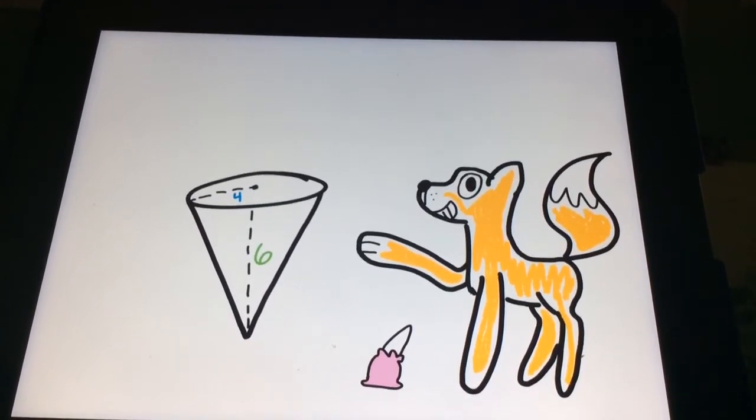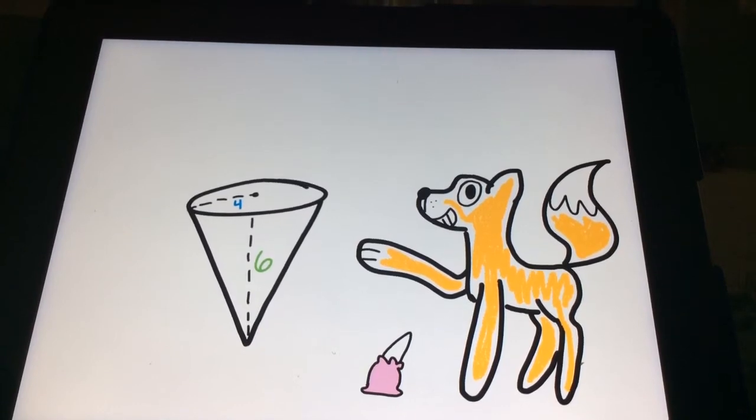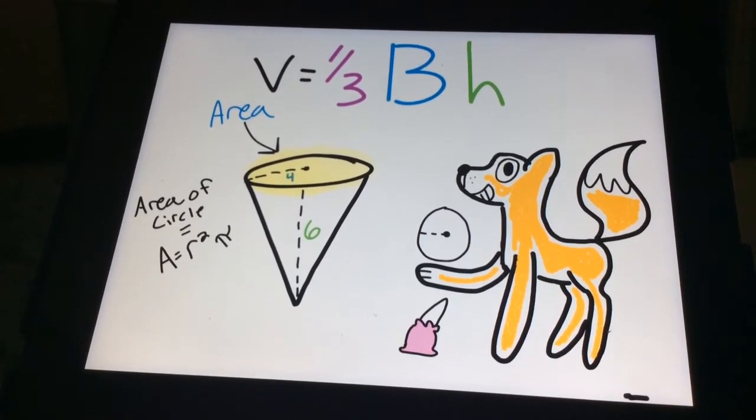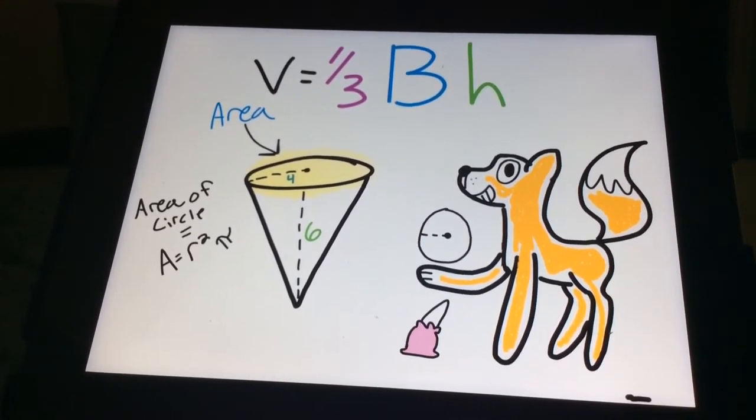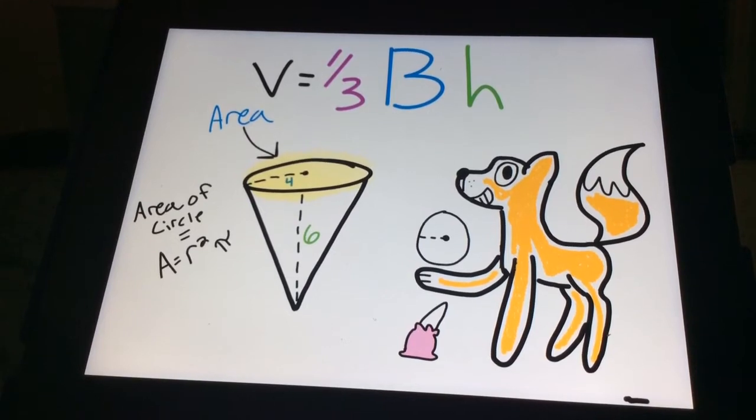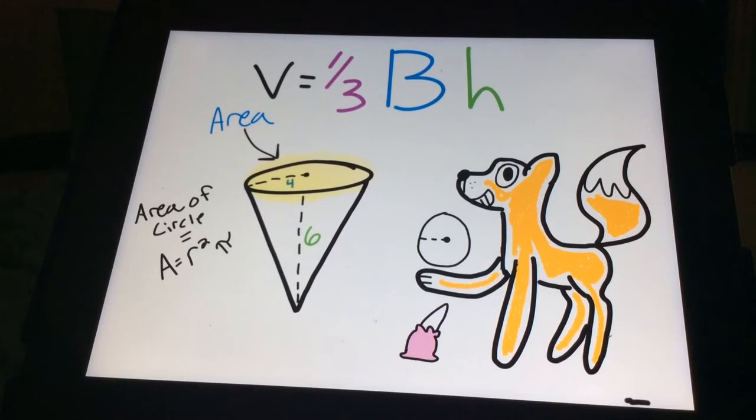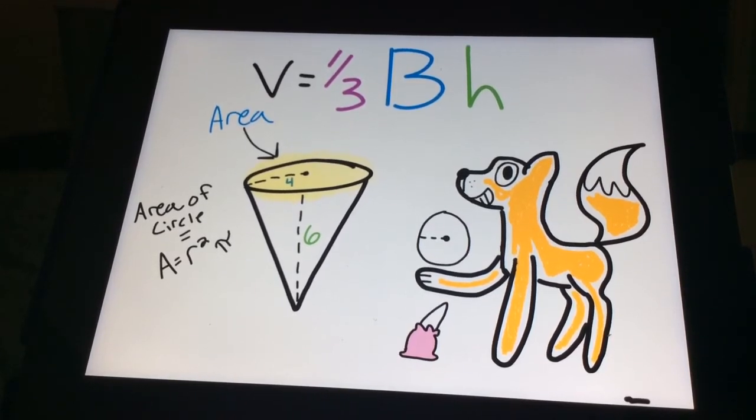Let's say that the radius of the base is four and the cone is approximately six units high. Now we all know how to find the area of the base. It's just a simple circle. The area of a circle is area equals radius squared times pi.